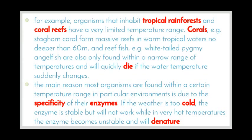Coral — for example, staghorn coral — forms massive reefs in warm tropical waters no deeper than 60 metres. Reef fish such as the white-tailed pygmy angelfish are also only found within a narrow range of temperatures and will quickly die if the water temperature suddenly changes. This is what we're seeing in the Great Barrier Reef, where temperatures are increasing due to climate change and much of the coral is dying. The main reason organisms are found within a certain temperature range is due to the specificity of their enzymes. If enzymes aren't within that narrow temperature range, they no longer function properly. If too cold, the enzyme is stable but won't work; in very hot temperatures, the enzyme becomes unstable and will denature, meaning the active site changes shape and no longer fits with its substrate.